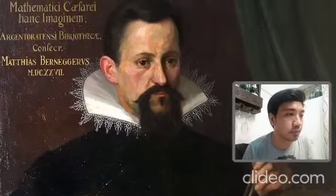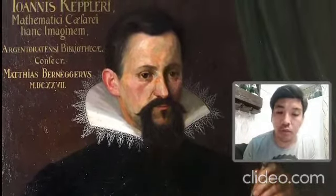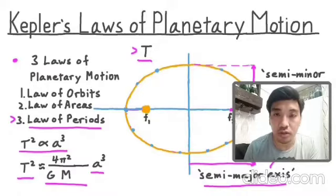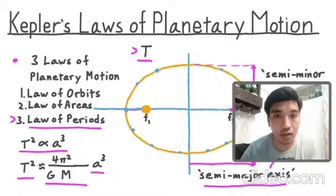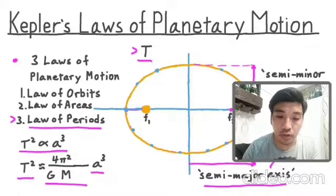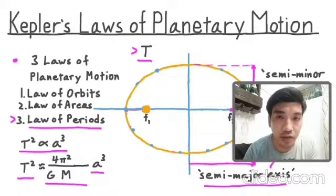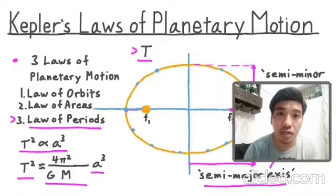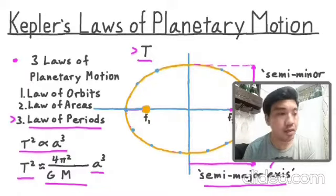Then Johannes Kepler wrote about the laws of planetary motion. He specified three laws: first, that the orbiting path is elliptical, not perfectly round; second, that planets do not move at uniform speed; and third, that the time it takes to revolve around the sun is directly proportional to the size of the planet.